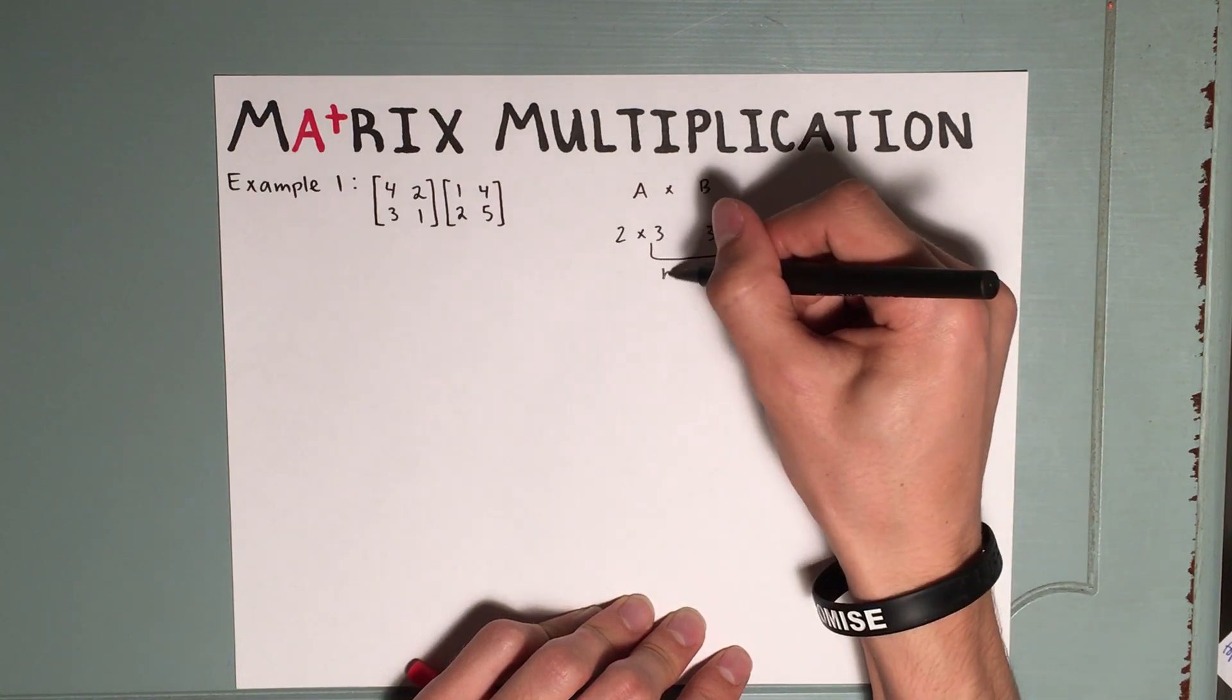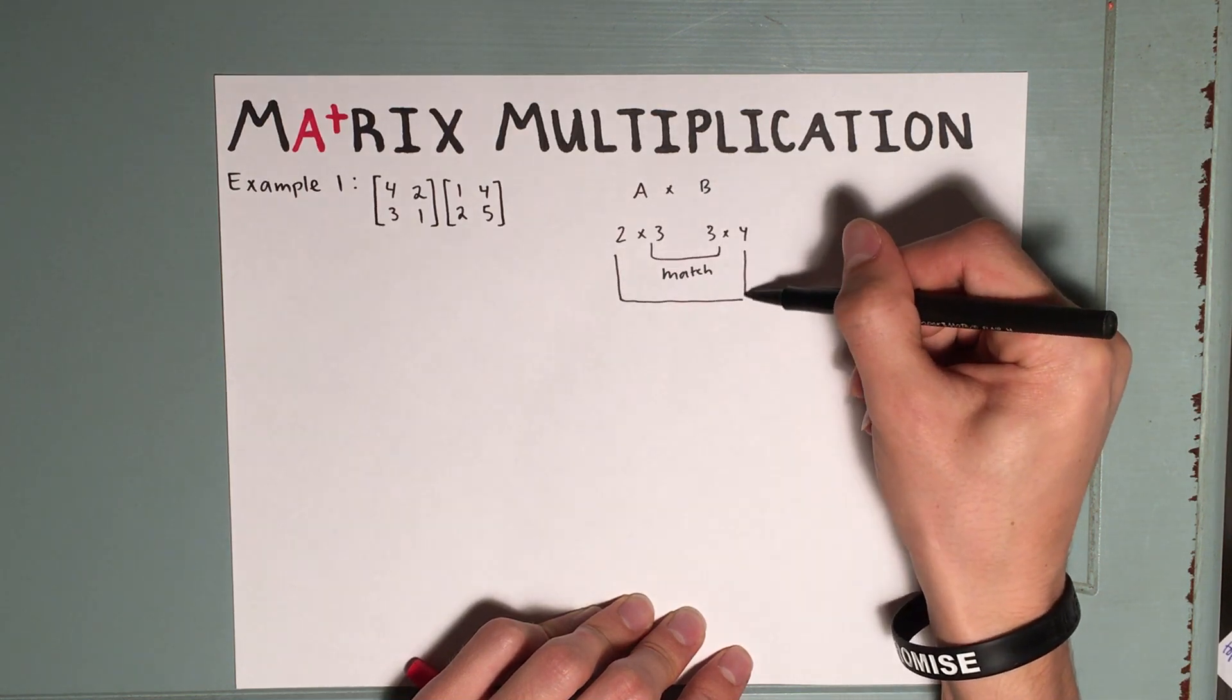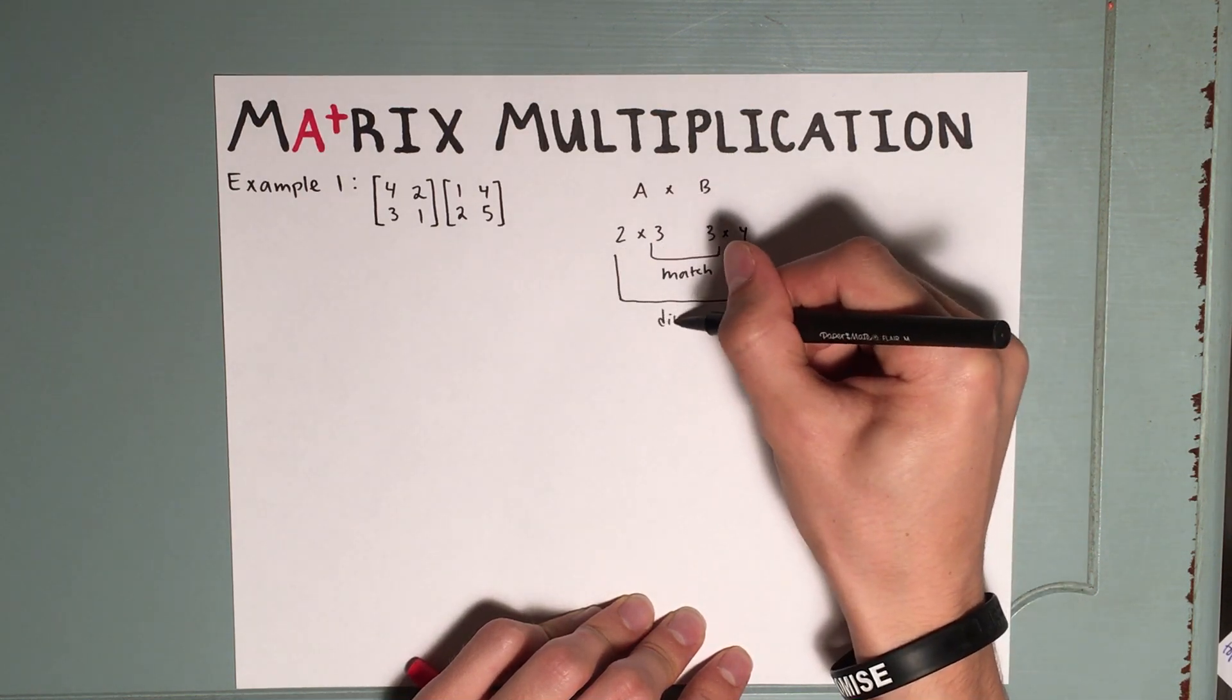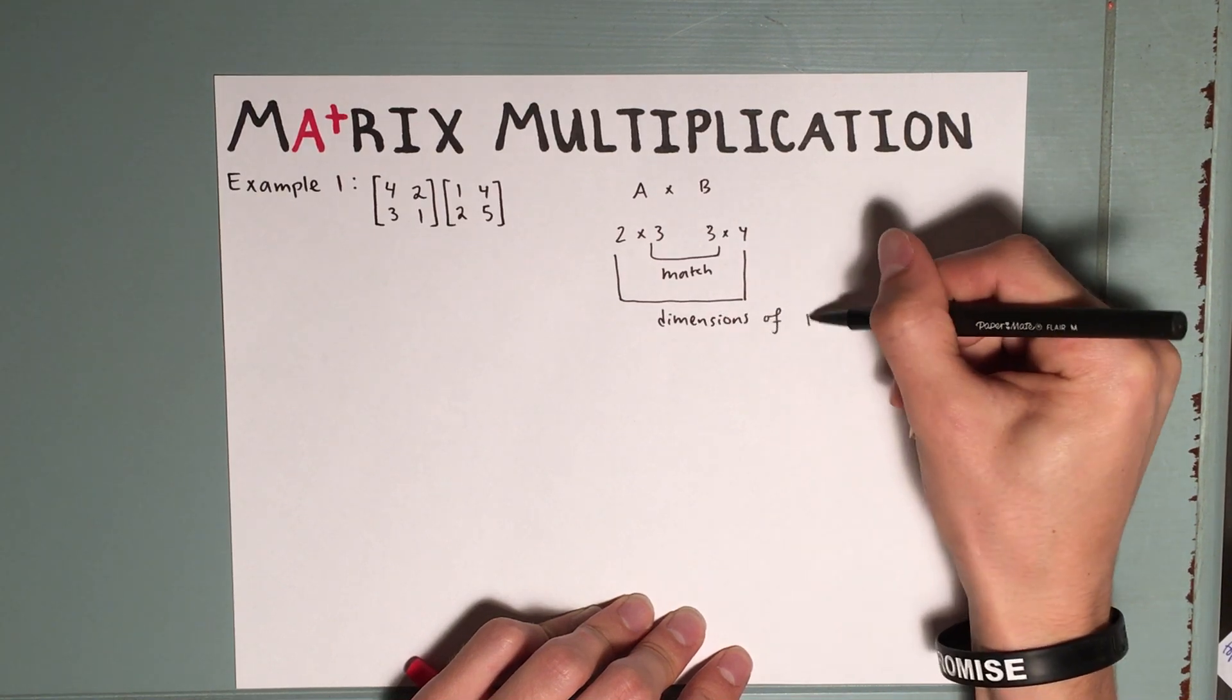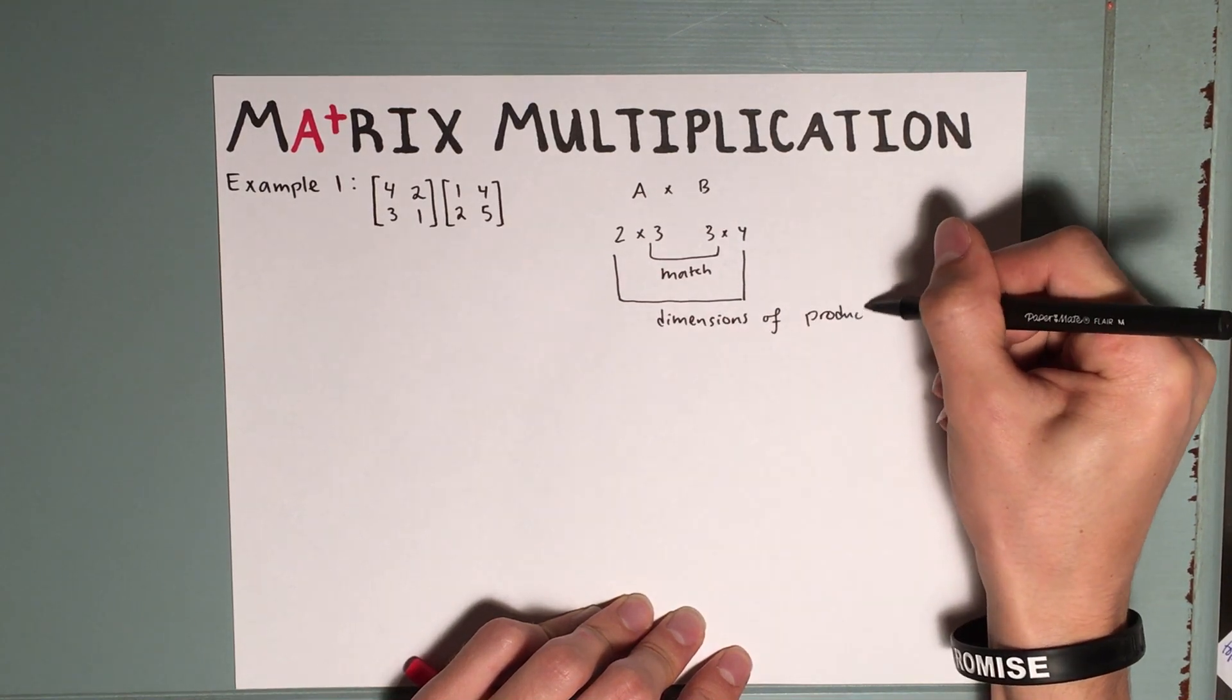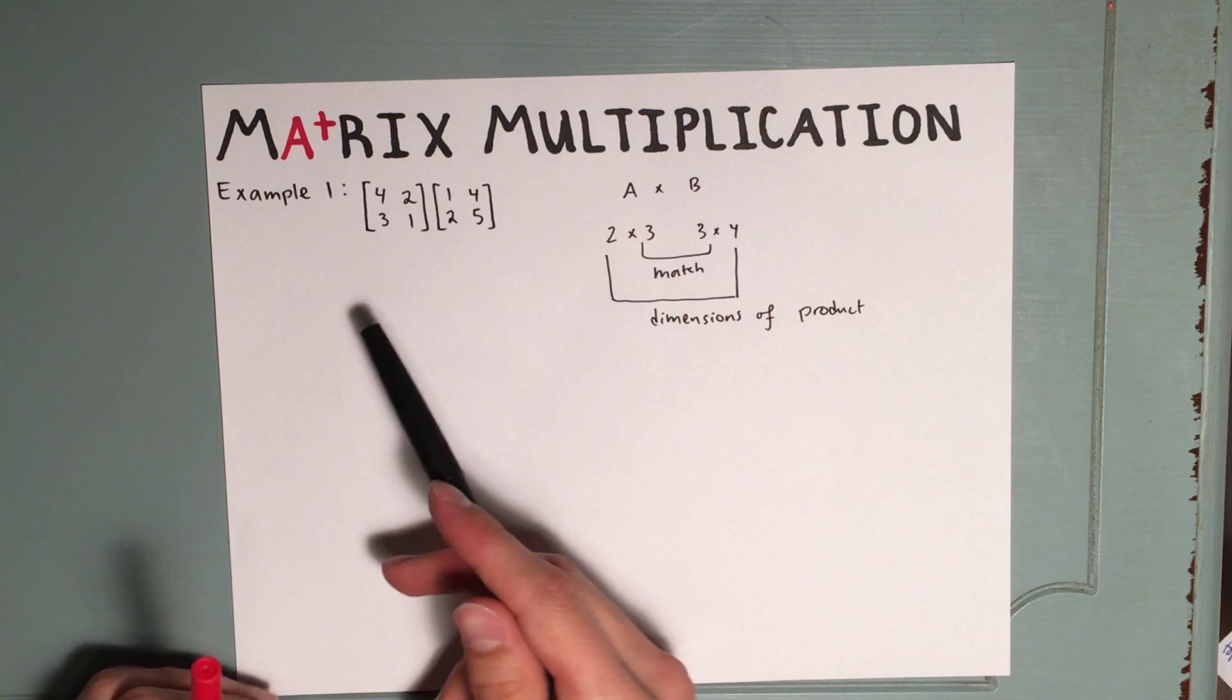The actual dimensions of the product will be the outer, so 2 and 4. Dimensions of the product. We're always allowed to multiply square matrices, so with that out of the way, let's actually get started with an example.